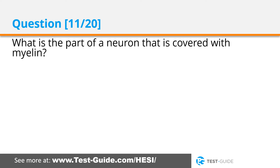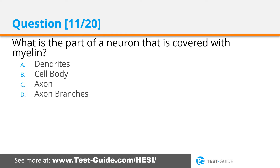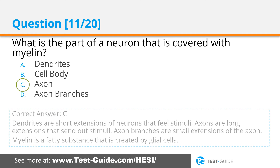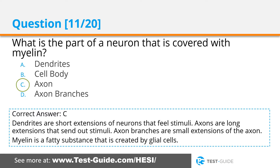Question eleven: What is the part of a neuron that is covered with myelin? Options: dendrites, cell body, axon, axon branches. Correct answer C. Dendrites are short extensions of neurons that detect stimuli. Axons are long extensions that send out stimuli. Axon branches are small extensions of the axon. Myelin is a fatty substance created by glial cells that covers the axon.